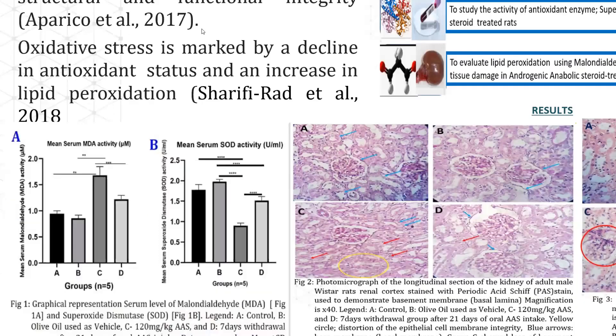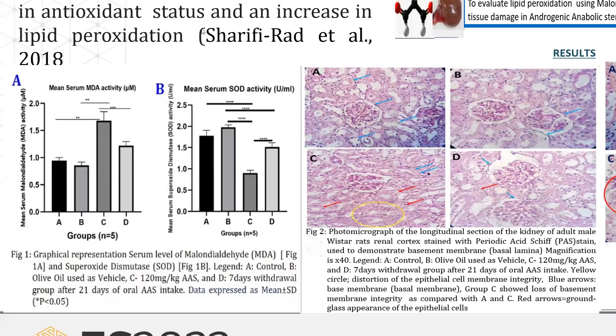Results show that anabolic androgenic steroids caused a significant increase in MDA activity, indicating increased lipid peroxidation as compared to control rats and olive oil-treated rats. In the withdrawal group, we observed a gradual decline in MDA activity, showing that cessation of the anabolic androgenic steroid injection causes renal tissue to gradually recover and reduce lipid peroxidation, since the inducing agent is no longer present.